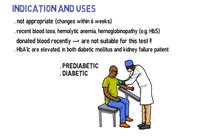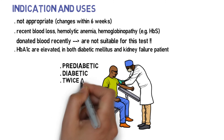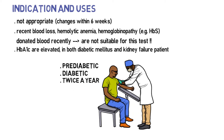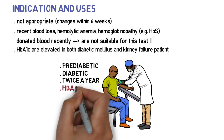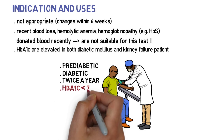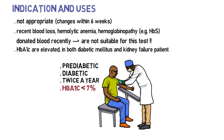The glycated hemoglobin test should be performed at least twice a year in diabetes mellitus patients. Patients who have good glycemic control should have an HbA1c level less than 7% or close to the normal range.